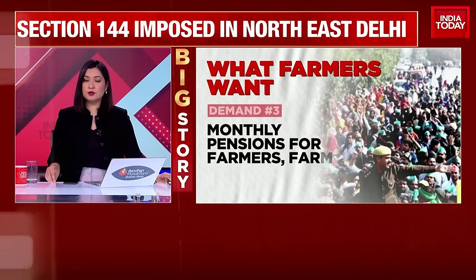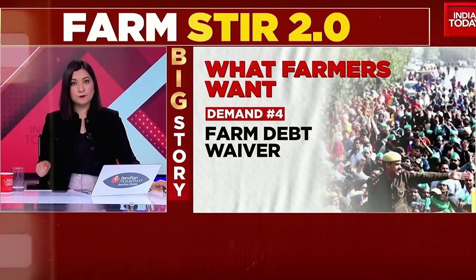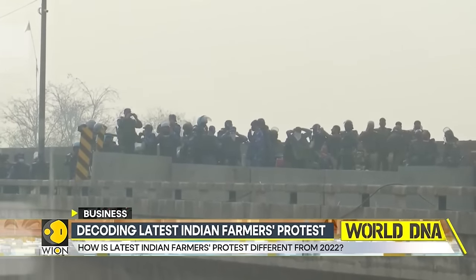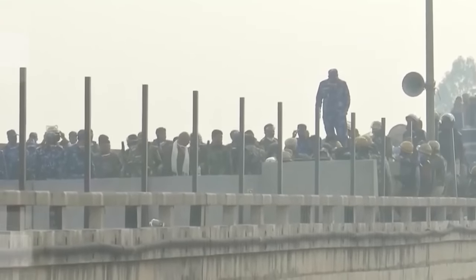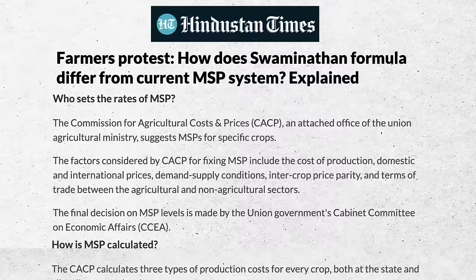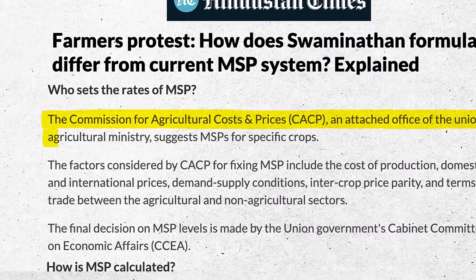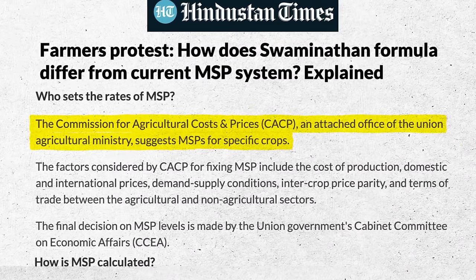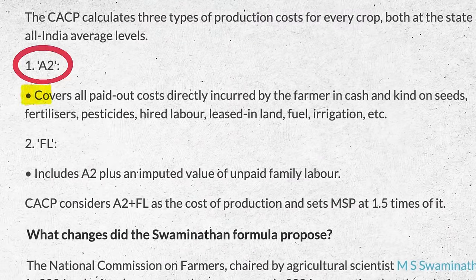So now the farmers are demanding that MSP be declared for all 23 crops and the minimum support price must be their legal right. With this Dilli Chalo March, the demand is to guarantee MSP for crops — that's the benchmark price set by the government for 23 crops twice a year to boost farmers' income. They want at least 50% profit over the production cost, monthly pensions for farmers over 60 years, and land in the capital to honor martyrs of previous protests.